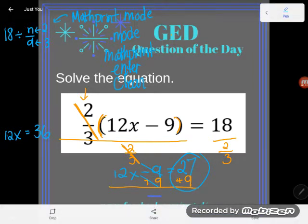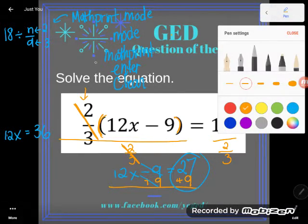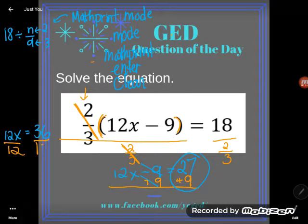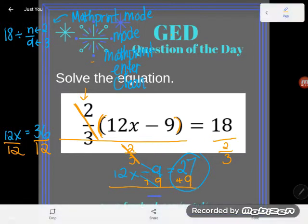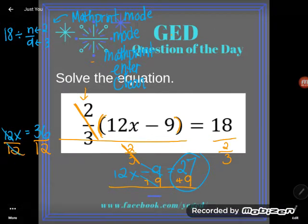I'm almost done, but x is not alone. I got to get rid of this 12 multiplier, so I'll divide, and again I have to do it to both sides since it's a change I chose to make. Multiplying and dividing by 12 are opposites, they cancel, and I get x is equal to 3.